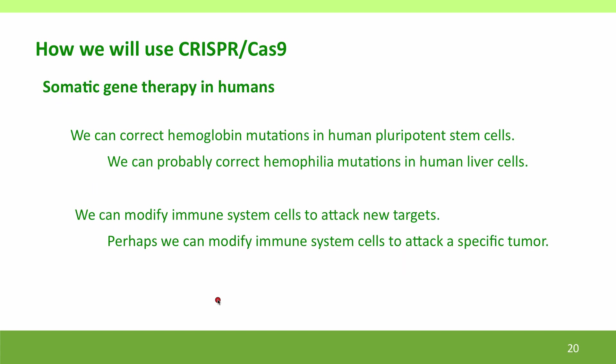One very tempting and likely soon-to-come use of CRISPR-Cas9 is somatic gene therapy in humans — not changing the germline, but changing body tissues to correct a metabolic problem. We know we can correct hemoglobin mutations in human stem cells, and we can probably use CRISPR to correct hemophilia mutations in human liver cells so they produce clotting factors. We can also modify immune system cells to attack new targets — perhaps to attack the cells of a specific tumor in a way that is relatively insensitive to the mutations the tumor might undergo.